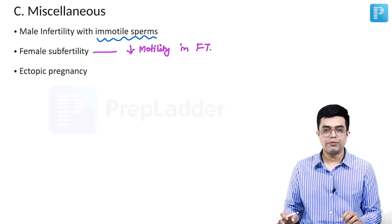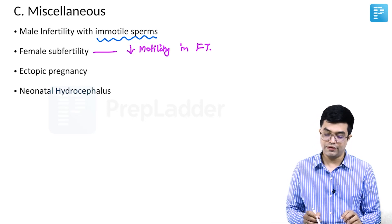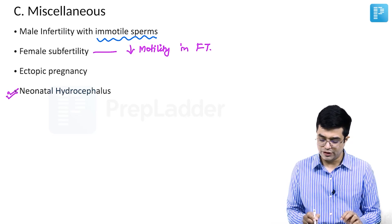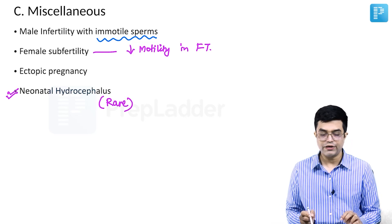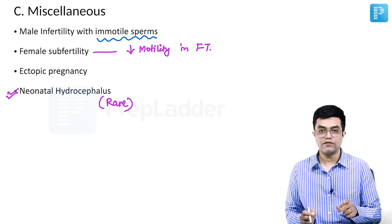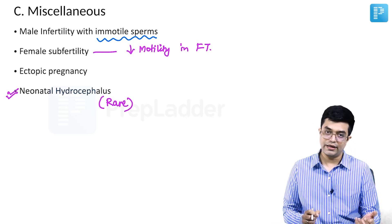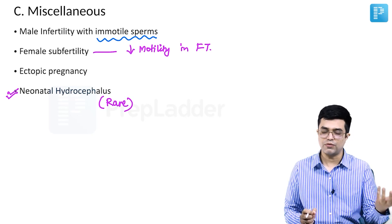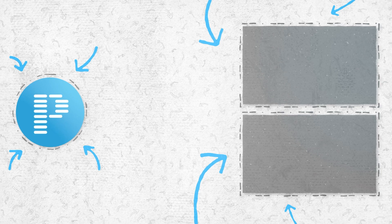Ectopic pregnancy can also develop. Neonatal hydrocephalus has also been described, though it is a relatively rare condition. If hydrocephalus is present along with situs inversus in a young child, it is again a clue that the patient is probably having Kartagener syndrome.